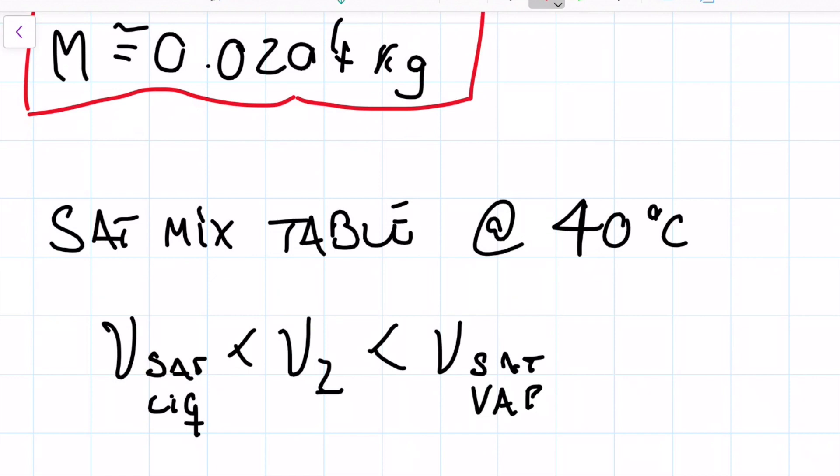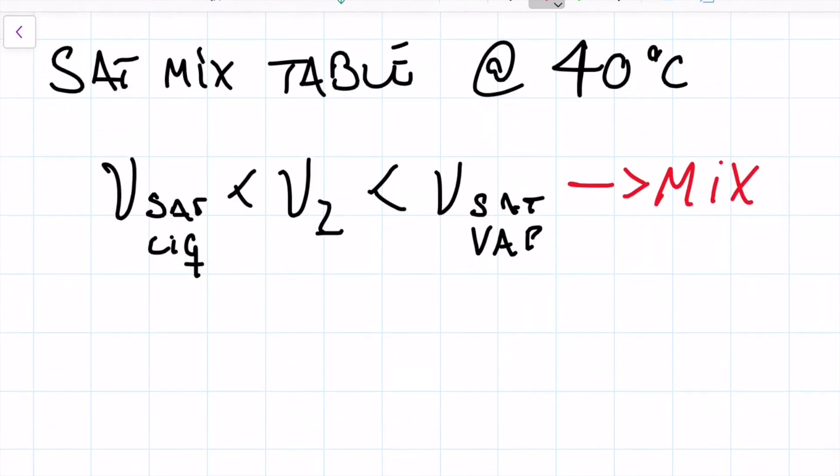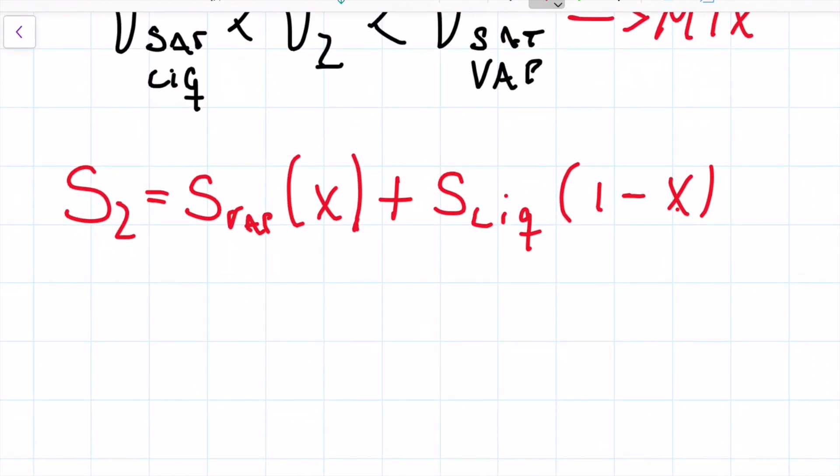So that allows us to conclude this is a mixture, right? So for us to grab our entropy, which is what we're after, we know that our entropy on state two will be a mixture, so it's going to be the entropy of the saturated vapor times the quality, that is how much vapor I have in mass, plus whatever is left with the saturated liquid, and whatever is left is going to be 100% or one minus my quality. So I need to grab the quality.